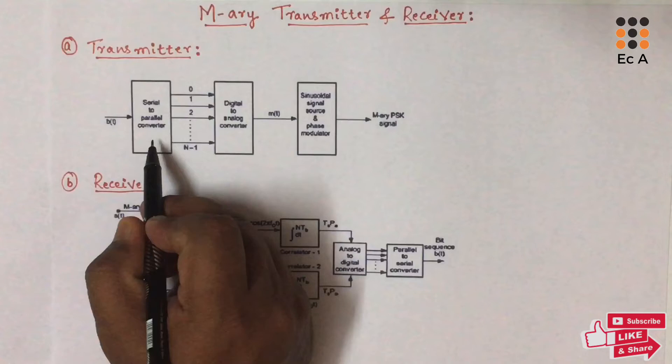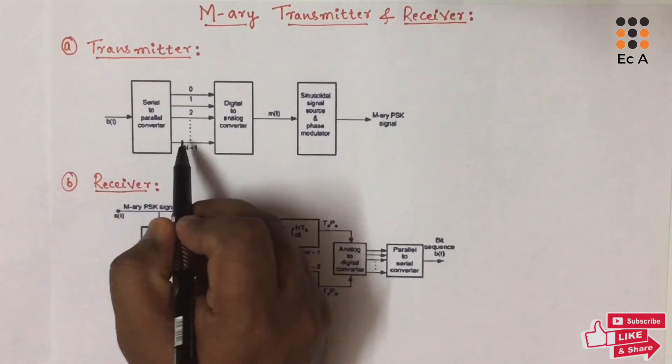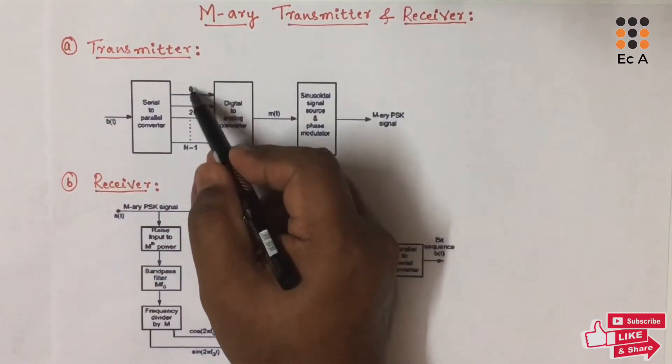The serial-to-parallel converter converts the binary sequence into a symbol of n successive bits. This symbol, we will call that as word.